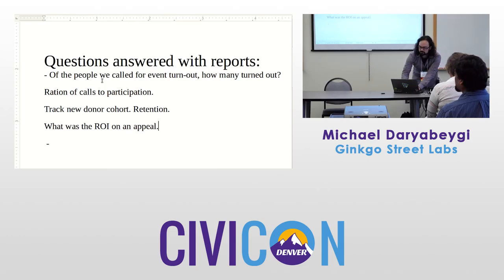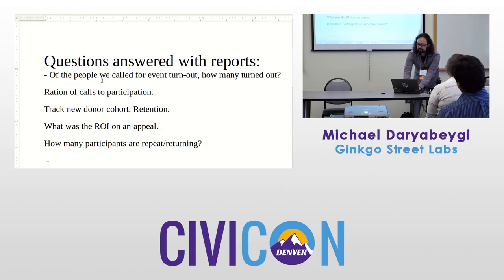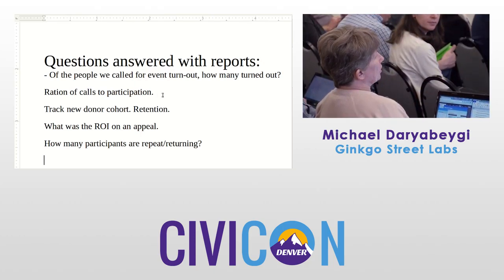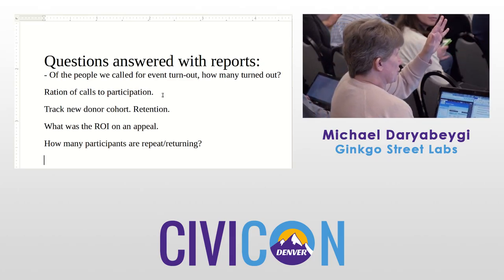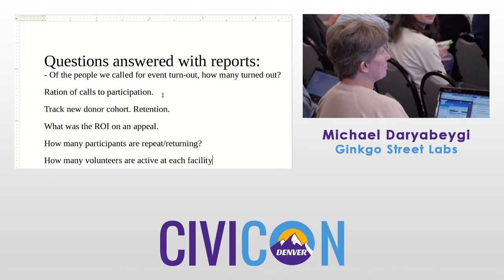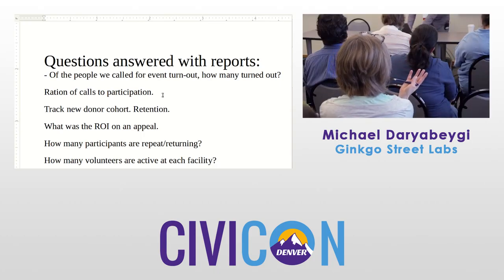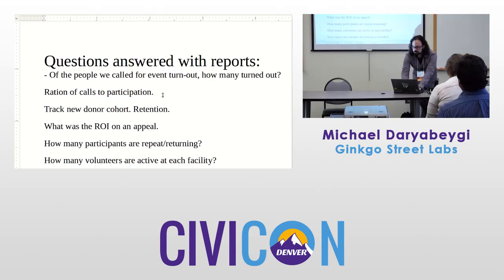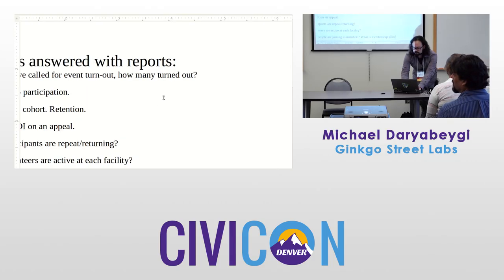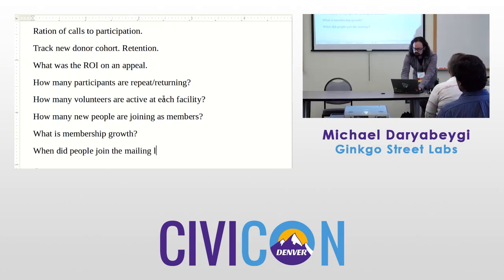More audience questions: how many participants have been participants before versus new versus returning? Tracking volunteers at elder care facilities and which volunteers are at which facilities — tracking those relationships is tough. How many new people are joining and what sources are they coming from — the growth of your membership. And viewing when people join the mailing list.